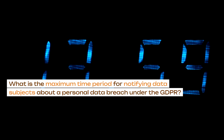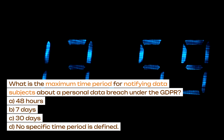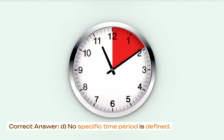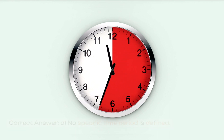What is the maximum time period for notifying data subjects about a personal data breach under the GDPR? A. 48 hours. B. 7 days. C. 30 days. D. No specific time period is defined. Correct answer: D. No specific time period is defined.